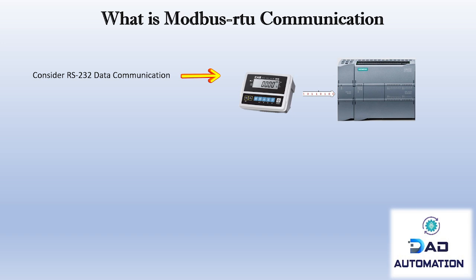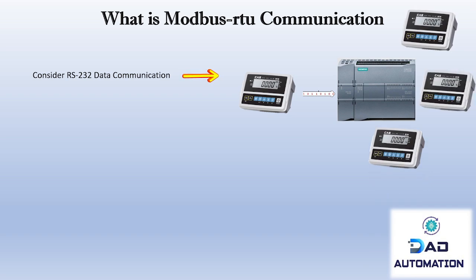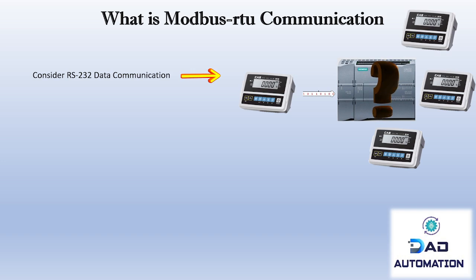Consider RS232 data communication. In our previous lesson you learned how to communicate with a weighing scale to read weight data in an industrial setting, where point-to-point data transmission was used and only one module could be connected to the PLC port. If we need to connect many devices to a PLC, the RS232 system would be very complicated, requiring many ports. This method is not cost effective due to PLC limitations, more cable requirements, limited acceptable distance between DTE and DCE, and limited data transfer rate.